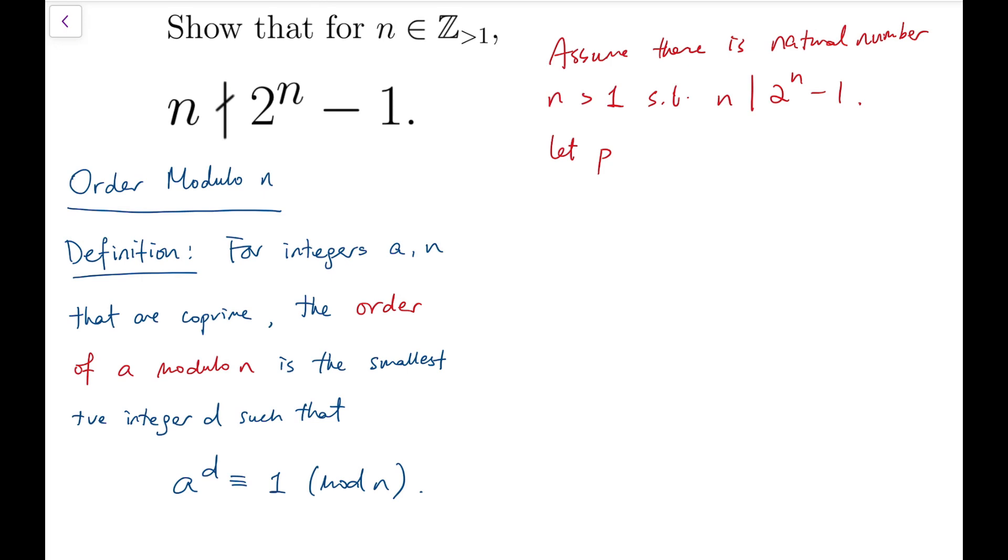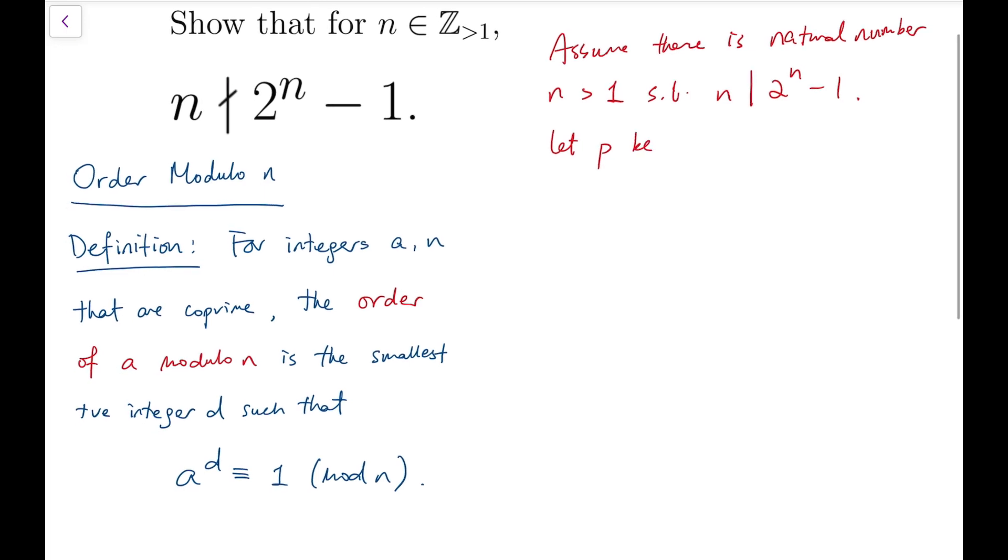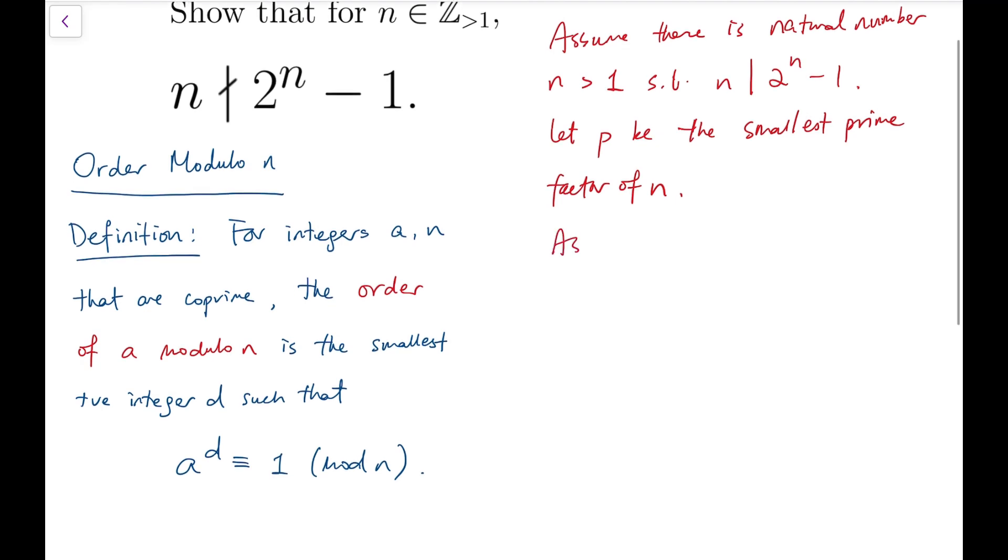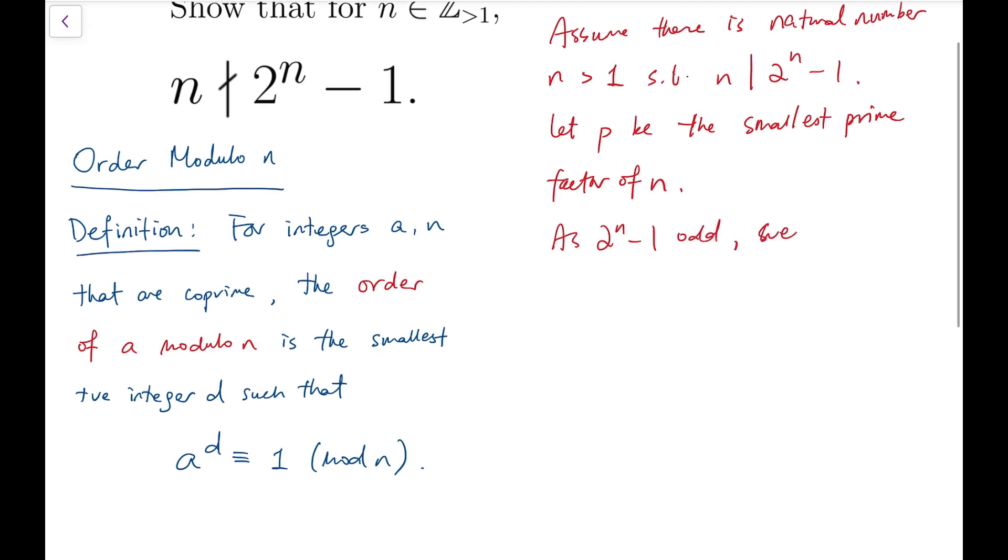And then, as we have planned, let p be the smallest prime factor of n. Now, since 2 to the power n minus 1 must be odd, so we have n as the divisor of that number, and also p to be also an odd number.